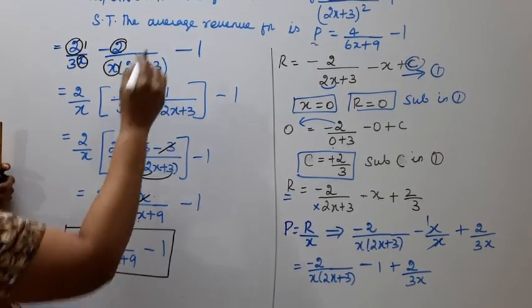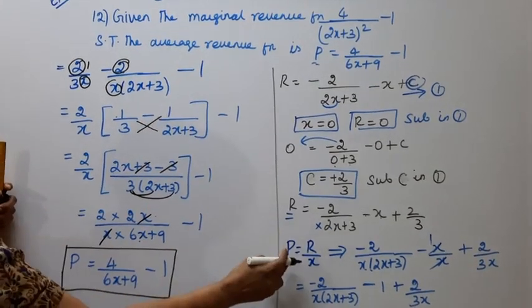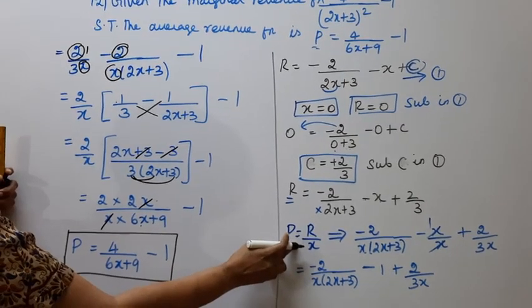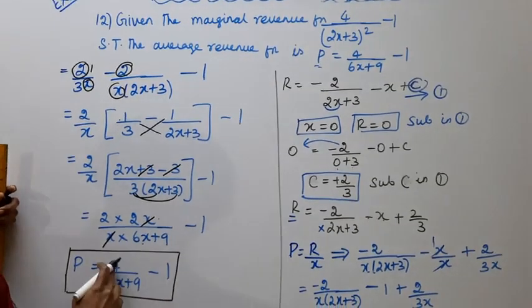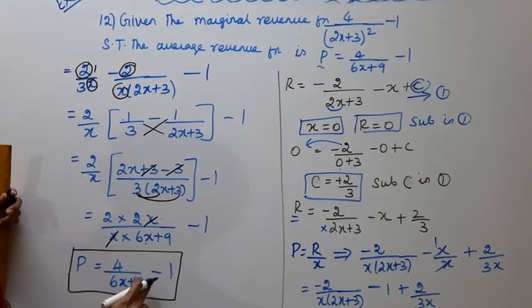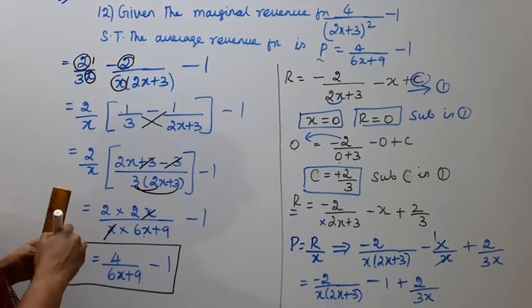From marginal revenue to average revenue, we get the answer: P = 4/(6x+9) - 1.